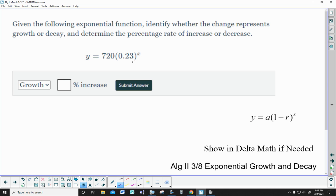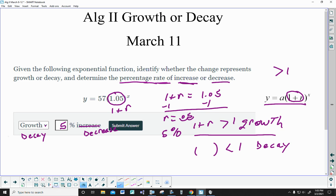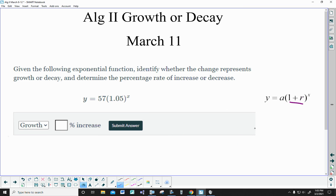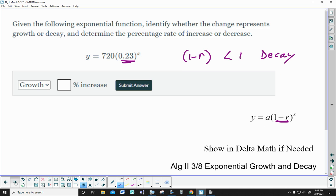Now I said I wasn't going to write 1 plus r for this number being bigger than 1 because it's really 1 minus r. When this is less than 1, when what's in the parentheses is less than 1, it's decay. And what's in there is 1 minus r rather than 1 plus r. R is the rate.